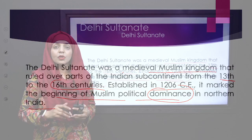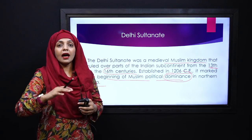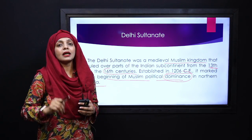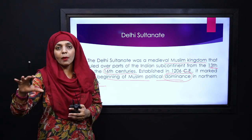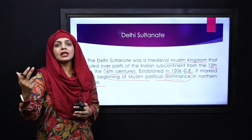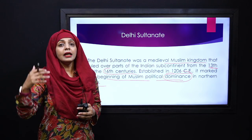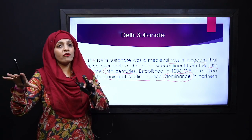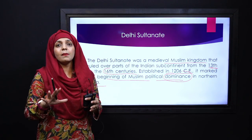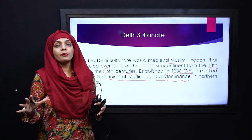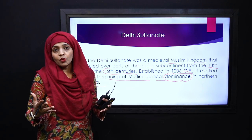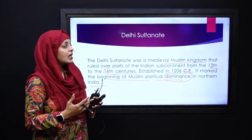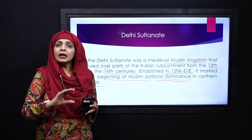My dear students, kyunke hum ne last lecture mein padha tha ke ahista ahista Hindu dominance thi, woh ahista ahista se kum hoti ja rahi hai, kyunke Musalmaan joh hai, woh apna ruler, muktelif dynasties le kar aa rahe hain. Koji ek dynasty continuously hukumat nahi kar rahi, lekin jo muktelif dynasties aa rahi hain, woh kis tariqe se Hindu dominance kum karti ja rahi hain, aur is tariqe se Islam ka baqaida taur per South Asia ke maqam par start up hua tha.